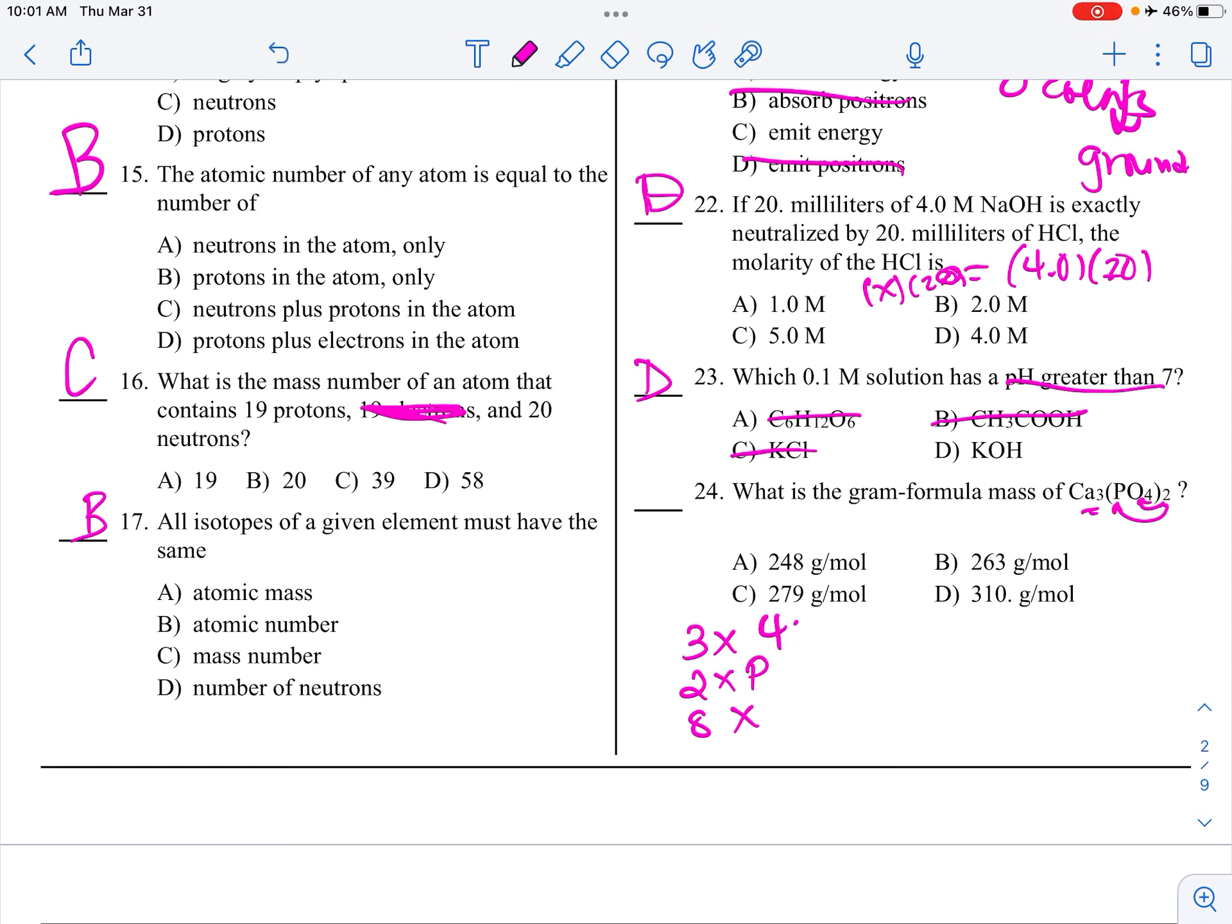So, you take your masses from periodic table. So, 40 times 3 is 120. Phosphorus is 31. So, 62, and 16 times 8 is 128. So, let's add them up. And you get 310 grams per mole. Just add it up. But make sure you distribute.